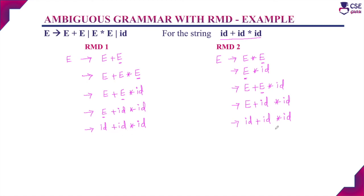If the grammar derives more than one rightmost derivation, then that grammar is also ambiguous. So, if the grammar produces more than one parse tree, or derives more than one leftmost derivation, or more than one rightmost derivation, then the given grammar is an ambiguous grammar. In the next session, we will see some more examples for ambiguous grammar.